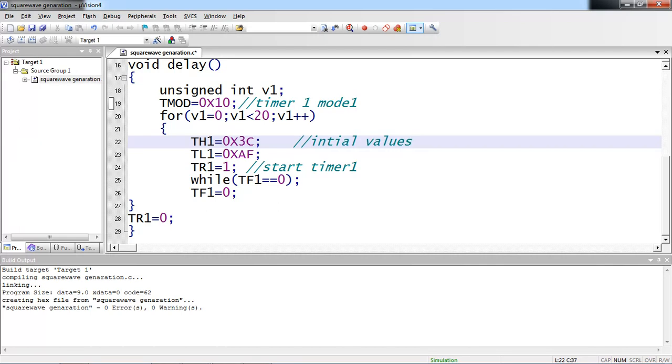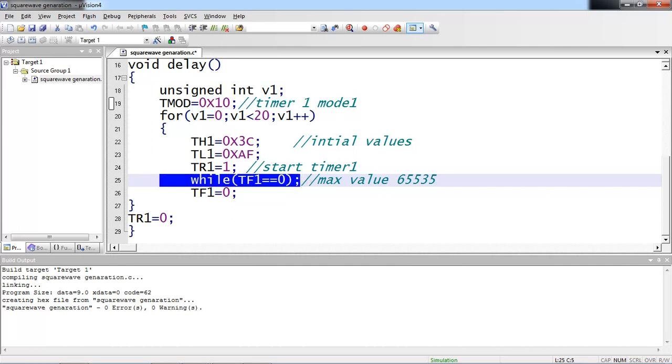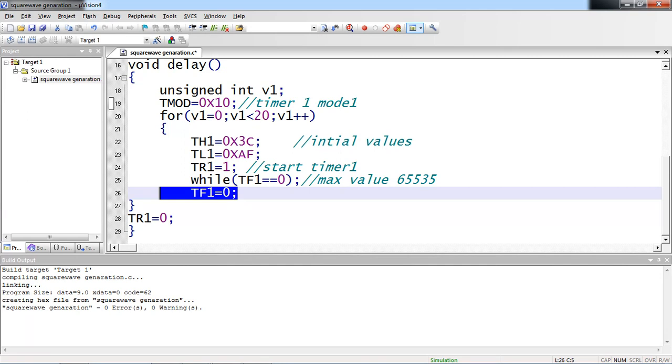And whenever timer1 reaches maximum value, which means whenever timer1 stands from 3CAF to FFFF, which means 65,535, whenever timer1 reaches maximum value, flag bit becomes 1. You need to wait until flag bit becomes 1. While of TF1 equals to 0, terminates with semicolon means, if it remains 0, stay here. Whenever it becomes 1, then come to the next line. Clear this flag bit, because you have to repeat this process 20 times.